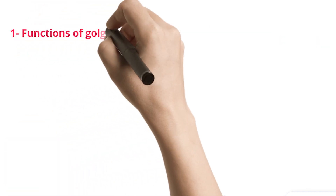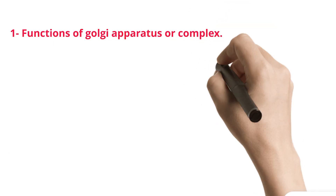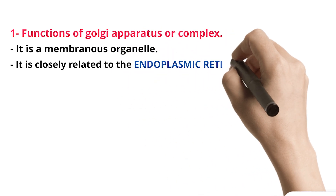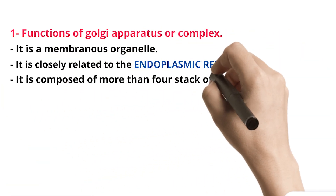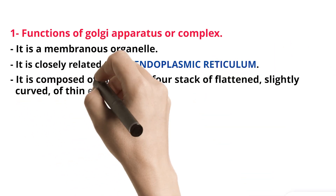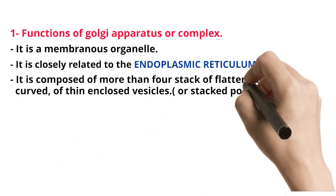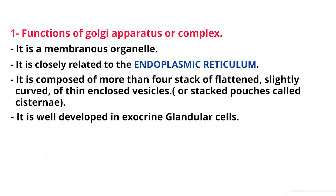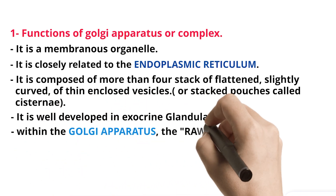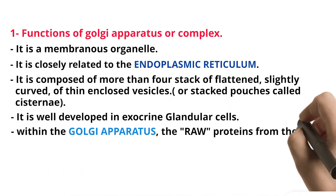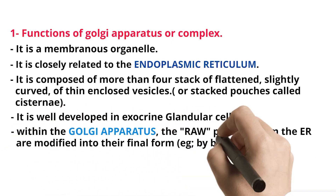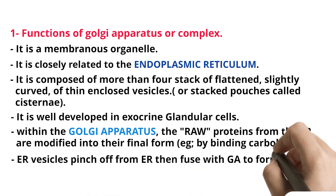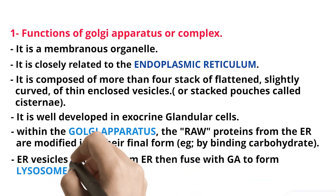Functions of Golgi Apparatus or Complex. It is a membranous organelle, closely related to the endoplasmic reticulum. It is composed of more than four stacks of flattened, slightly curved, thin enclosed vesicles or stacked pouches called cisternae. It is well-developed in exocrine glandular cells. Within the Golgi apparatus, the raw proteins from the ER are modified into their final form, for example, by binding carbohydrate. ER vesicles pinch off from ER then fuse with GA to form lysosomes and secretory vesicles.